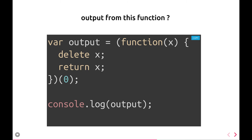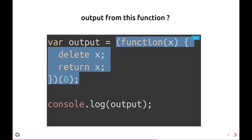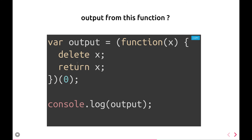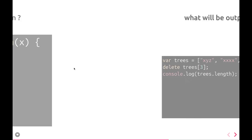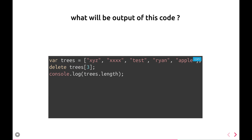What should be the output of this function? We are writing a function expression, immediately invoking it, deleting the x argument, and returning it. The output will be zero, because you can only do a delete operation on object properties, not on variables in JavaScript. So delete does nothing here — it just returns x, and x will be zero.